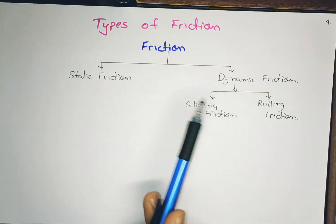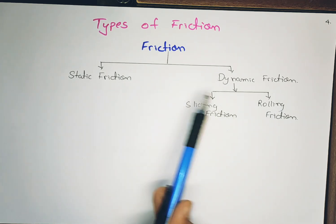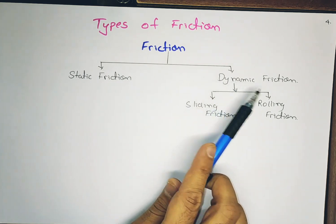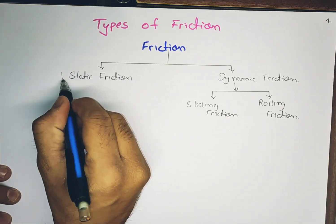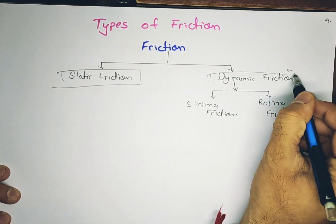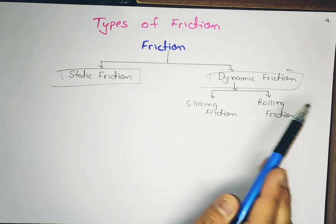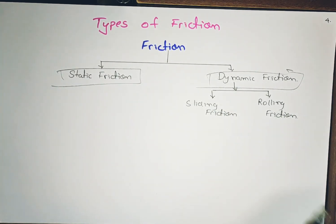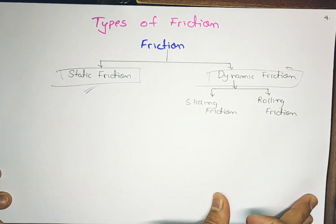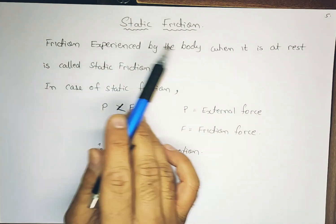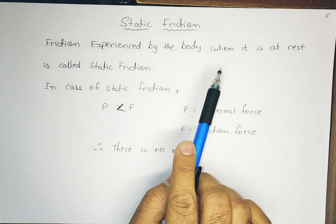As shown in the flowchart, there are two basic types of friction: static friction and dynamic friction. Dynamic friction is further divided into two subtypes: sliding friction and rolling friction. We will now understand each of these in turn.